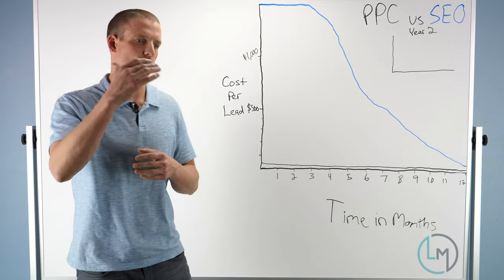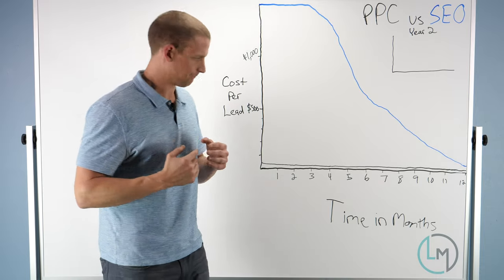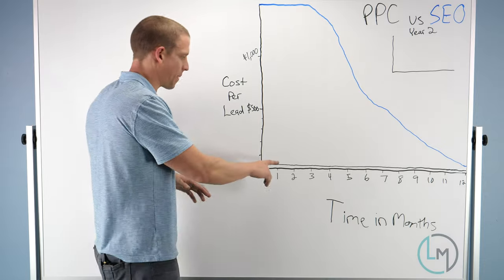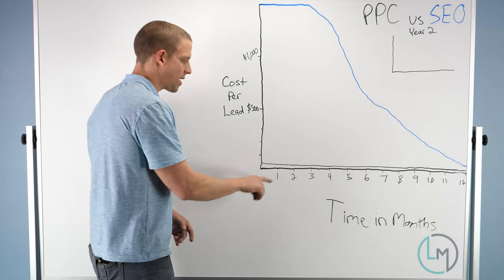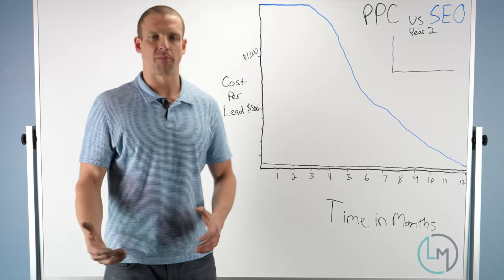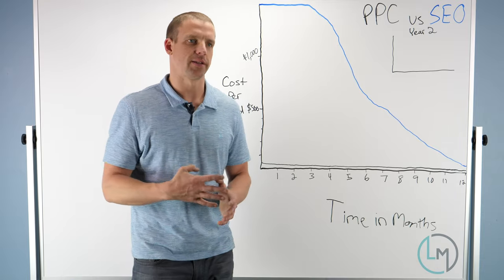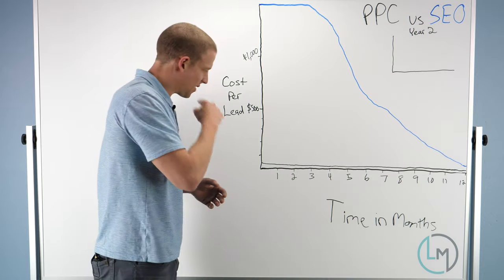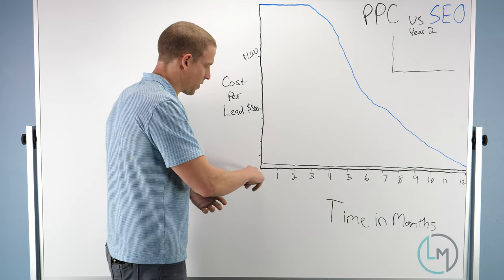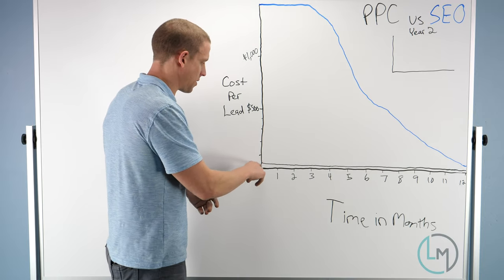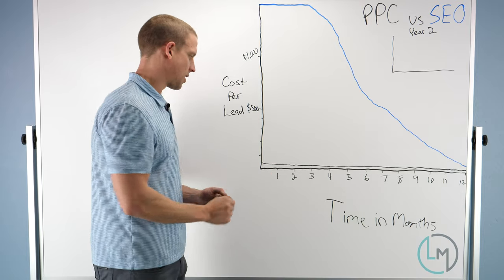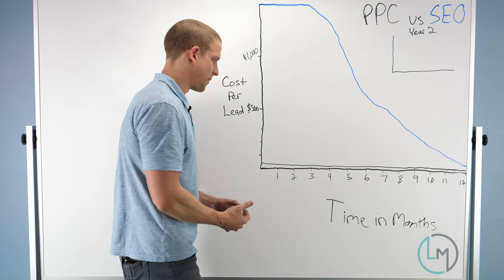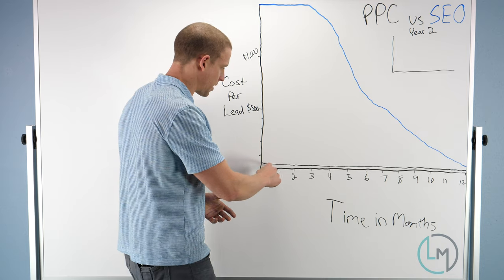With a pay-per-click campaign, you can see right away your cost per lead starts out pretty low. This is of course assuming you're working with an agency that knows what they're doing. You can see this business here, they're starting out with a cost per lead of probably around $40 or so, might even be a little bit less than that.